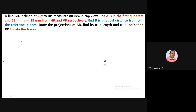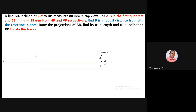Whenever traces are asked, leave some portion on the left-hand side of the XY reference line before starting to solve the problem. Point A-dash is 25 mm above XY (25 mm from HP). The locus of A is 15 mm below XY (15 mm in front of VP). Correspondingly, point A can be fixed. Dimensions are marked on the right side for clarity.